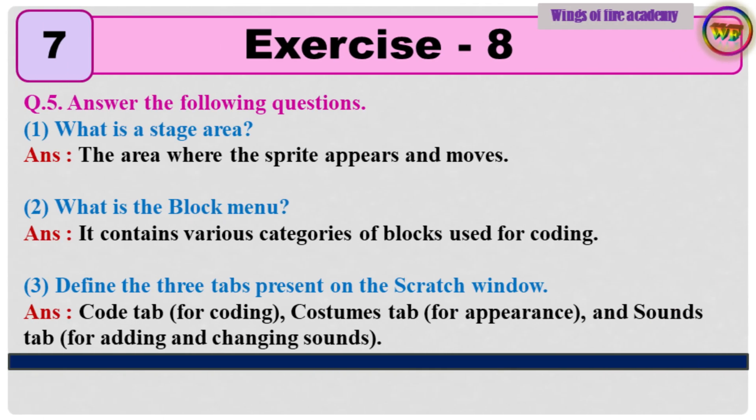Question 5: Answer the following questions. 1. What is a stage area? Answer: The area where the sprite appears and moves. 2. What is the block menu? Answer: It contains various categories of blocks used for coding.